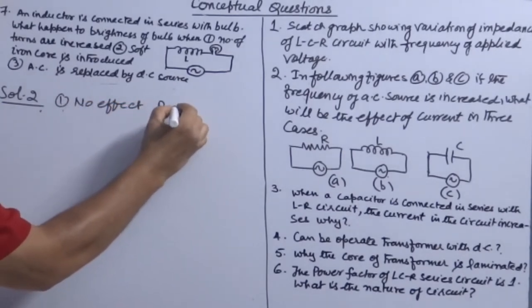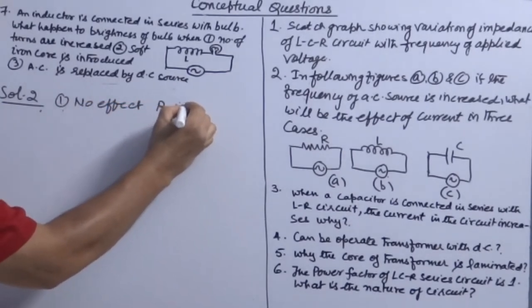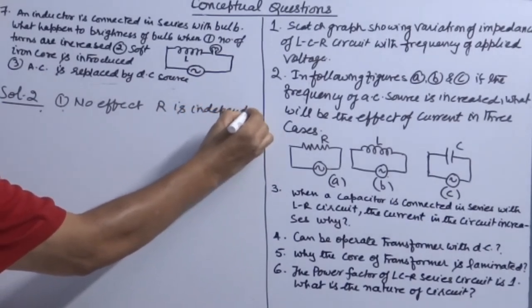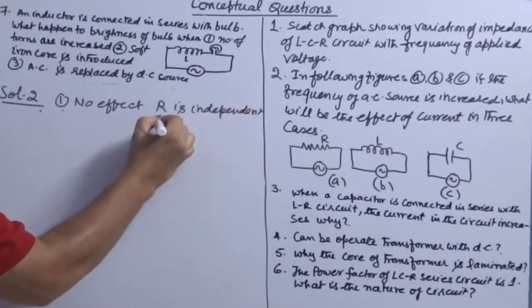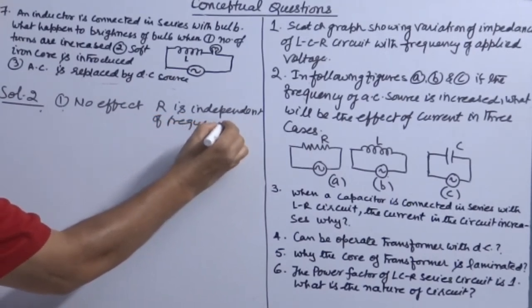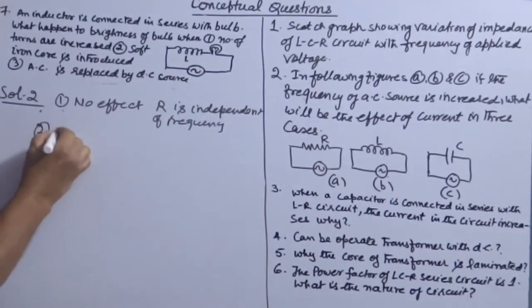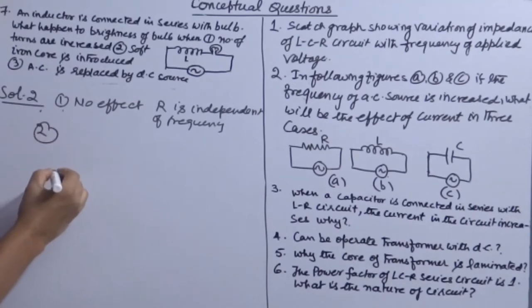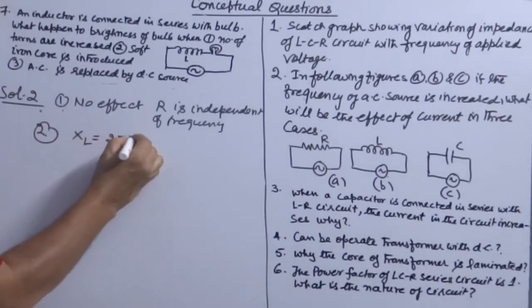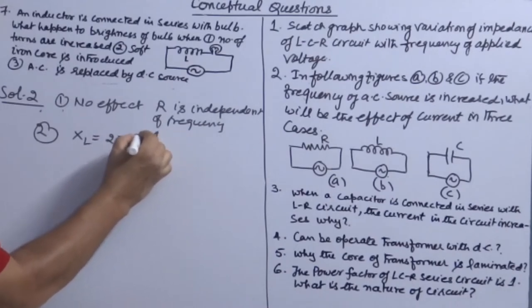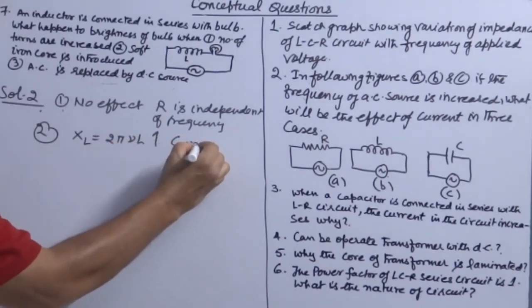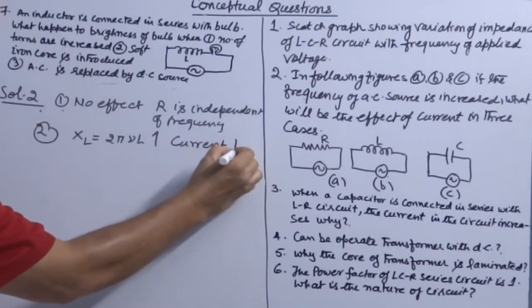Reason: R is independent of frequency. In the second case, when frequency is increased, XL will increase, so current will decrease.